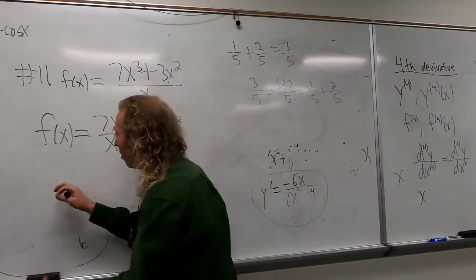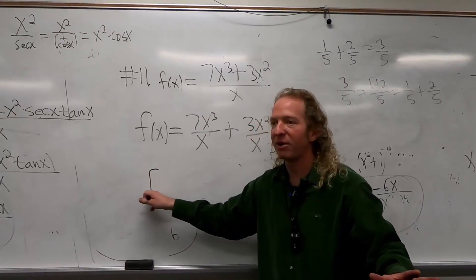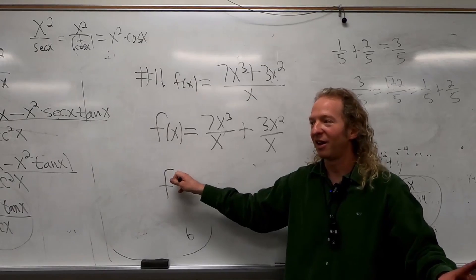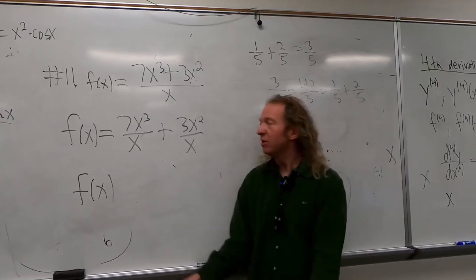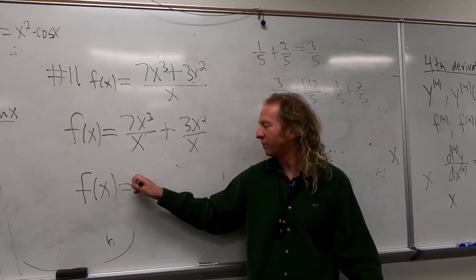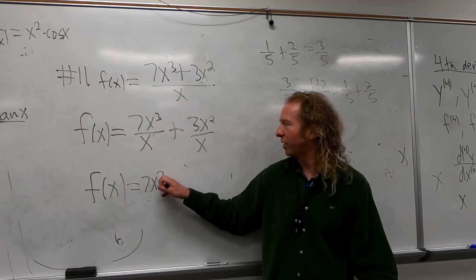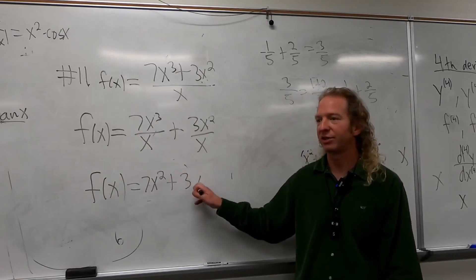So this is still, is this f or is this f prime now still? f, it's f. We're still simplifying, right? We're still simplifying. So these cancel, so we get 7x squared plus 3x.